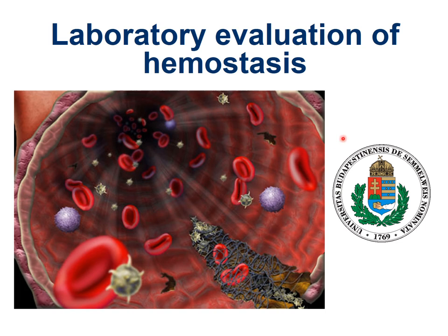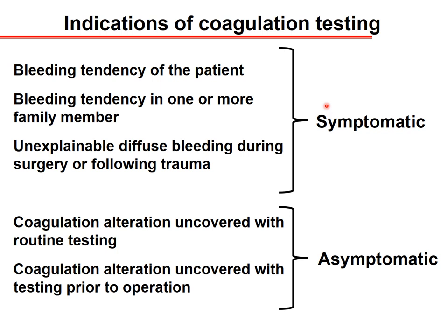In this lecture we are going to summarize the laboratory evaluation of hemostasis. When do we need to evaluate hemostasis and measure the hemostatic parameters? There are two major categories: patients who do have some symptoms, and patients who do not have any symptoms. Symptomatic cases include patients with a bleeding tendency, a family member with bleeding problems, or unexplained diffuse bleeding during surgery or following trauma. Asymptomatic cases are when coagulation alterations are uncovered with a routine test or when testing prior to an operation.